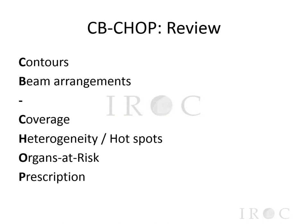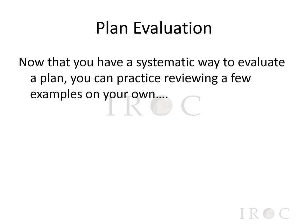In review, when evaluating a plan, you can use the CBCHOP method as a way to systematically evaluate whether a plan should be approved. This includes reviewing the contours for completion and accuracy, evaluating the beam arrangement and looking through the beam's eye view, making sure that coverage of target structures is sufficient, checking that hot spots are not too high and not located in organs at risk, ensuring that the metrics of organs at risk are met, and that the prescription is complete and accurate. Please refer to the example test to perform a self-test and ensure that you feel comfortable with the basics of CBCHOP.